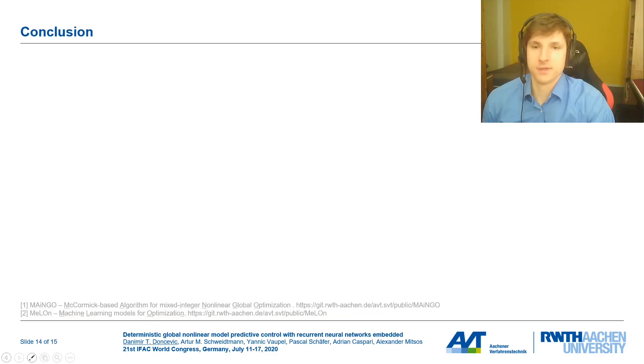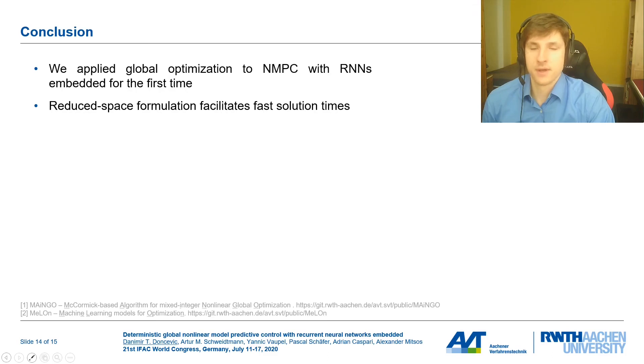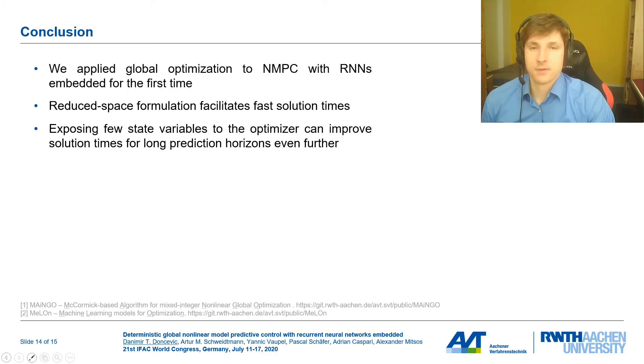Ok, let's have a short summary. We applied global NMPC to a process with an RNN surrogate model for the first time. To this end we have leveraged a recently developed reduced space formulation for optimization with feedforward neural networks embedded and applied it to NMPC. We have also shown that our method reaches faster solution times in the Van de Vusse case study than previous approaches in literature. We have also discussed and demonstrated how to further speed up the proposed method particularly for NMPC with long prediction horizons by a slight reformulation of the problem.